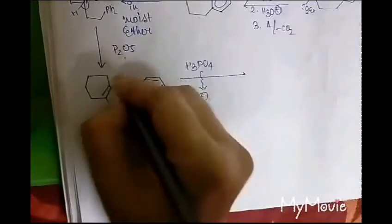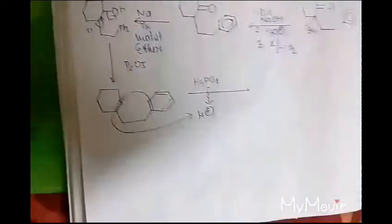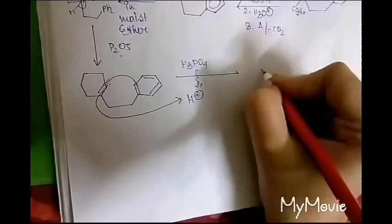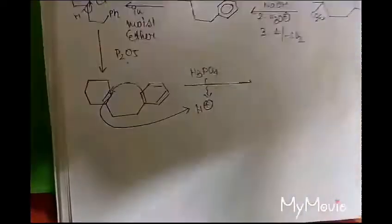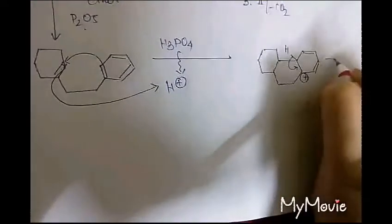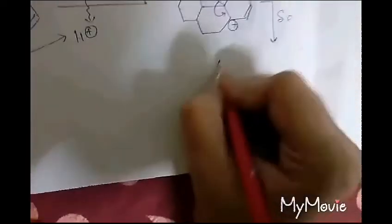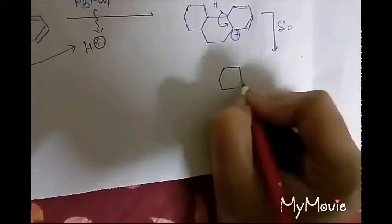By adding selenium as an aromatizing agent, we will get the phenanthrene molecule. The demerit of this method is that here this hydrogen will break and OH2 will leave the medium, but consequently this hydrogen can also leave and the double bond can rearrange. This type of rearrangement cannot always be controlled, and phenanthrene may not form cleanly.